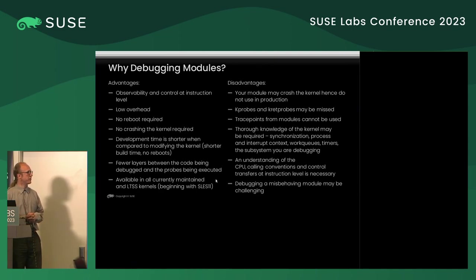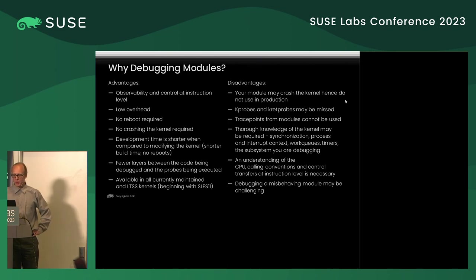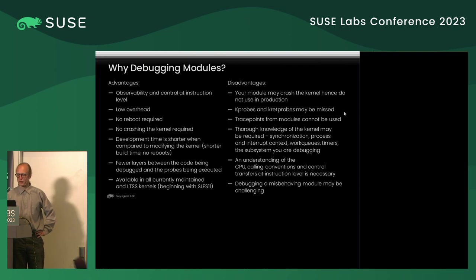Even where ftrace isn't as advanced as it is now — ftrace in SLES 11 is fairly basic — there are also some disadvantages. The main one is that the kernel doesn't always work the way you expect, so you may end up crashing it. You do not use this on production machines. When trying to make a customer run your module, you have to emphasize that this is not for production machines. There's also a caveat with kprobes and kretprobes — they may be missed. There's a counter to indicate that a kprobe or kretprobe has been missed.